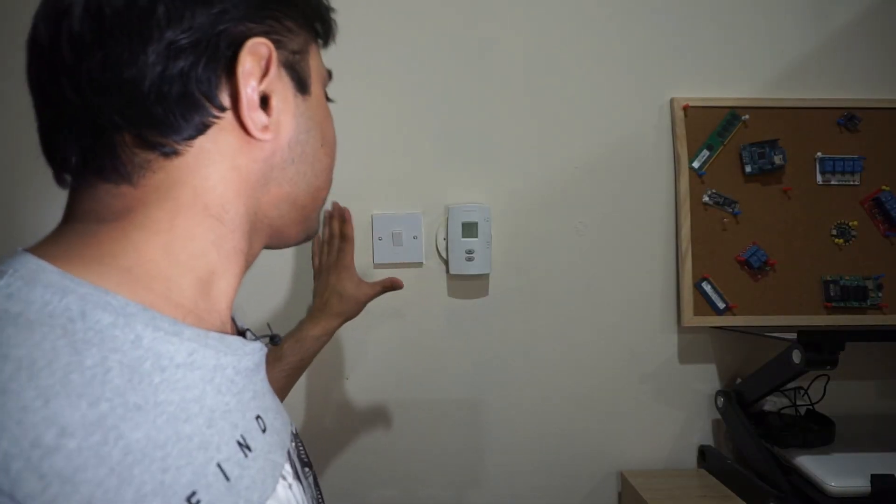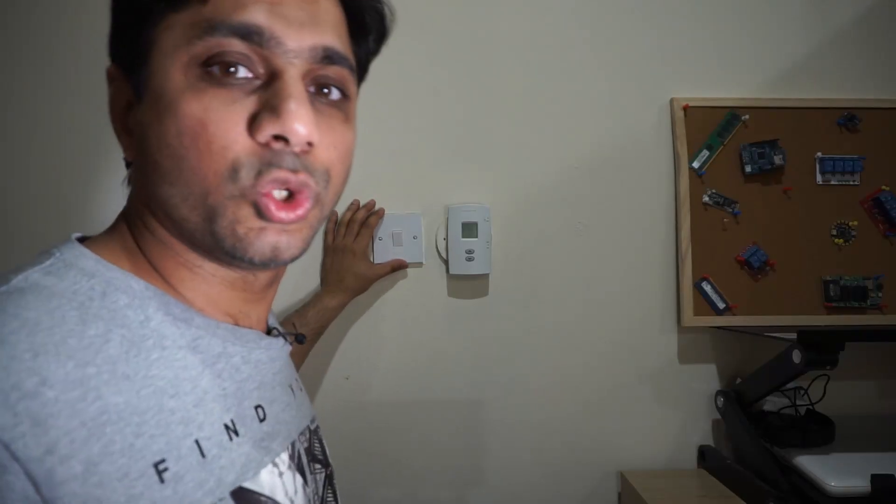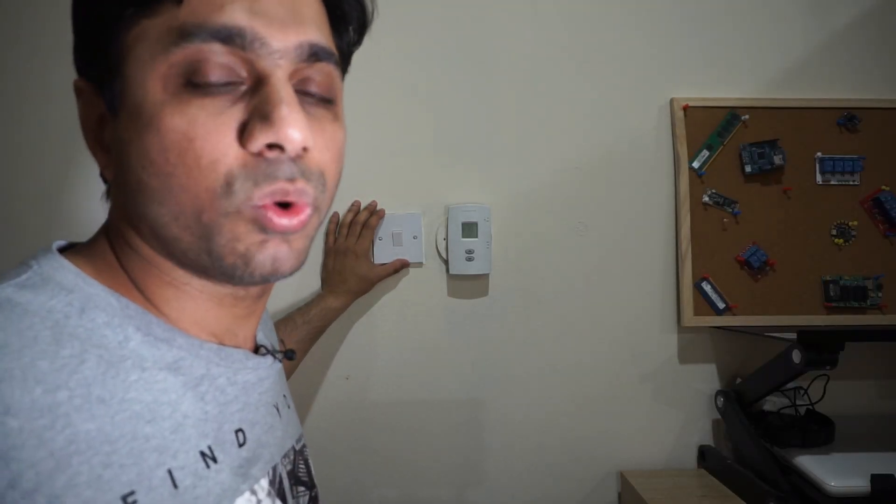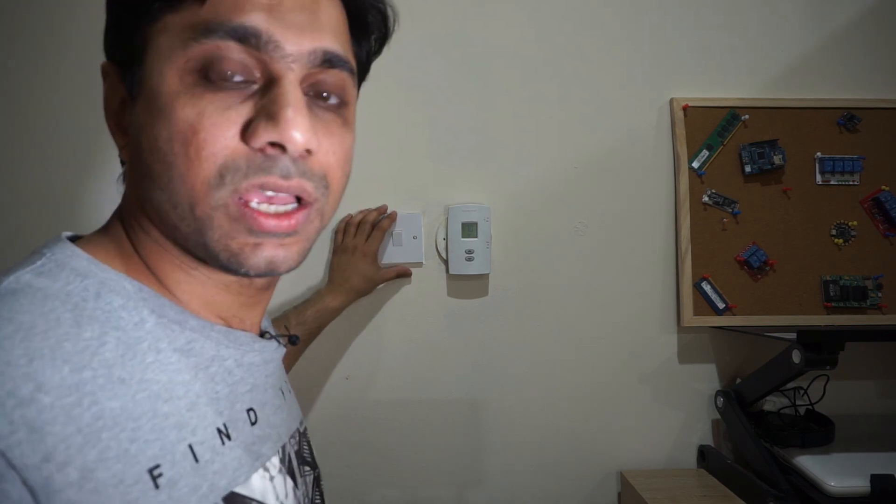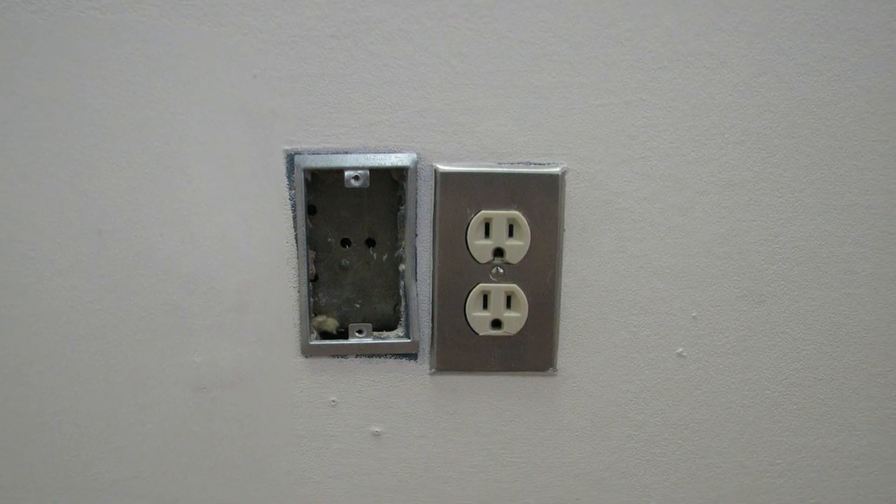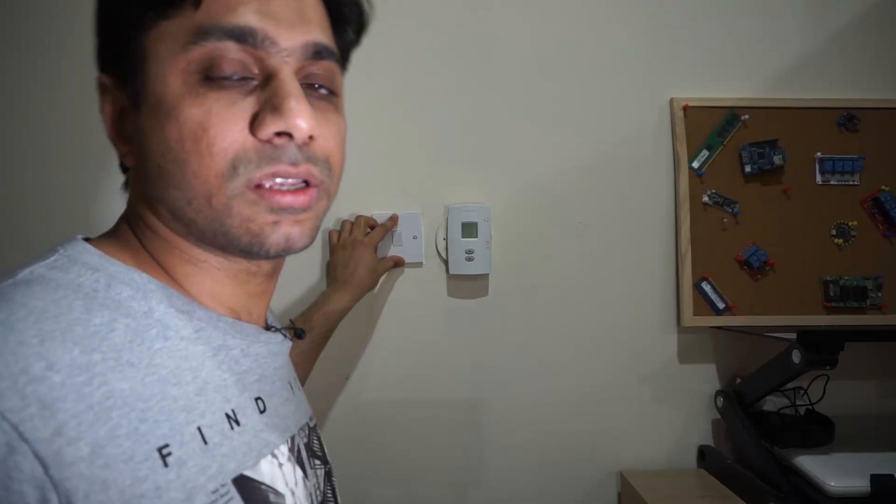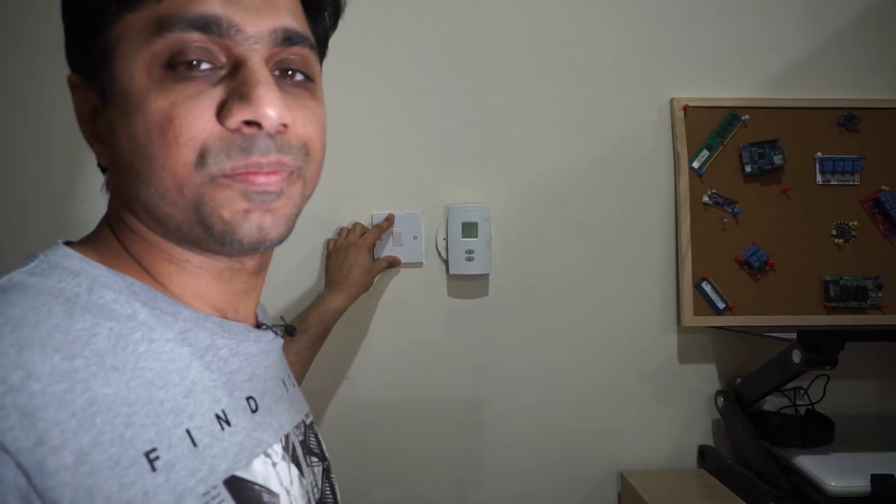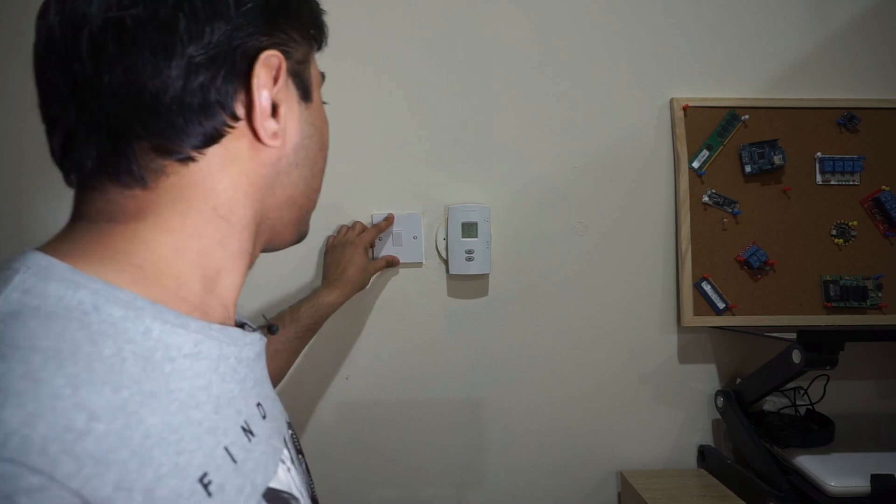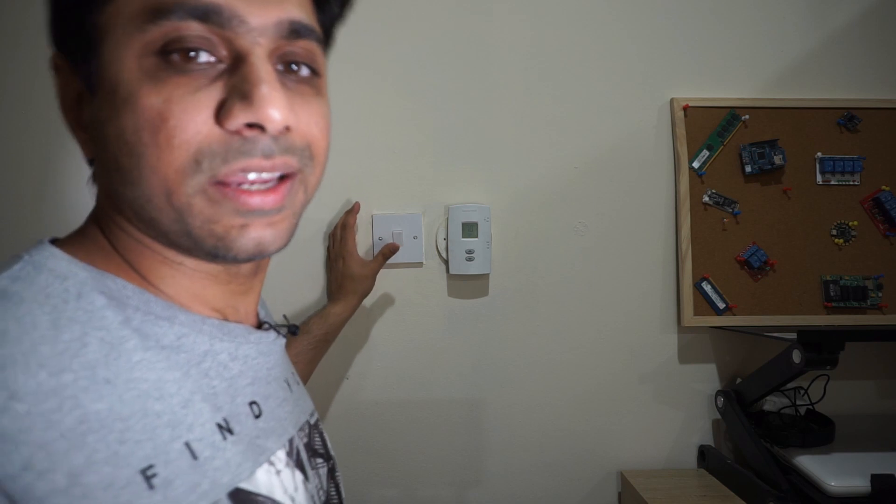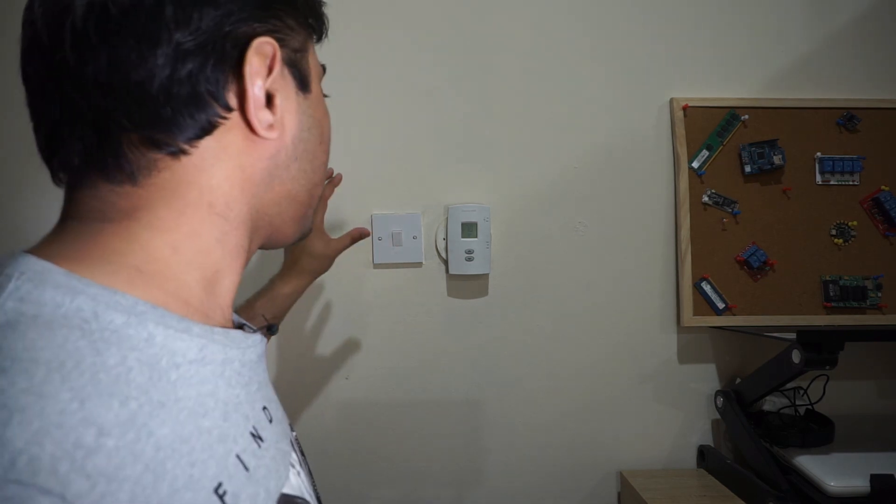And this is how my setup is. Let's say you don't have two switch boxes, you only have one switch box. Then let's hope that you have enough space in your box that you can house the switch as well as the relay and ESP32 or ESP8266, whichever. And the connections are similar.